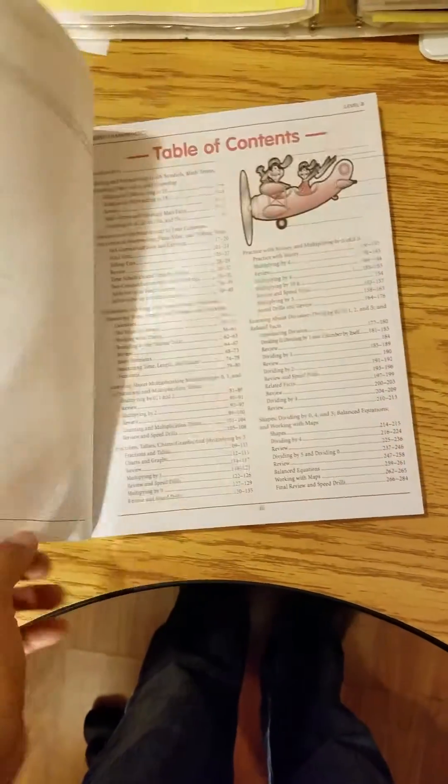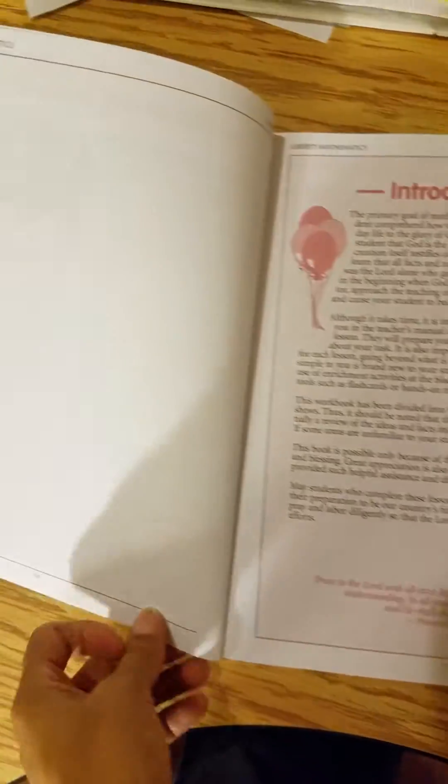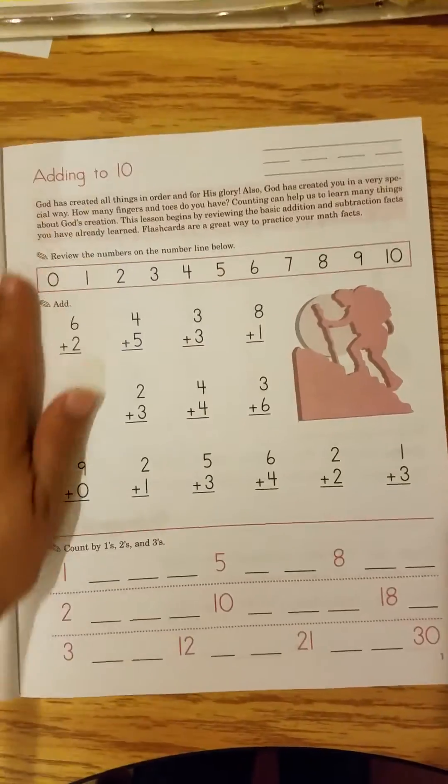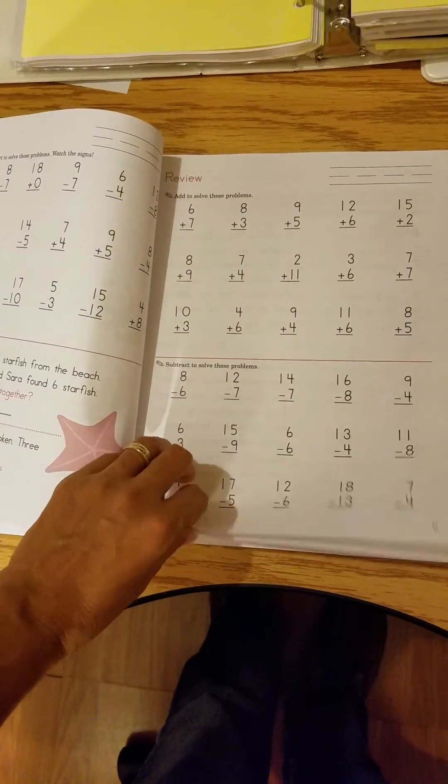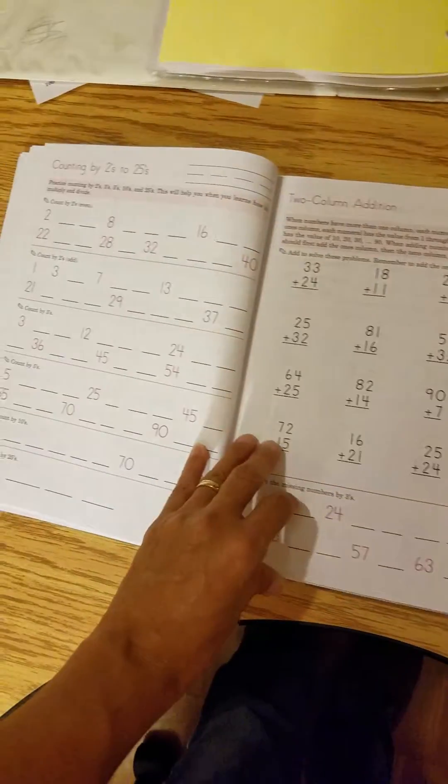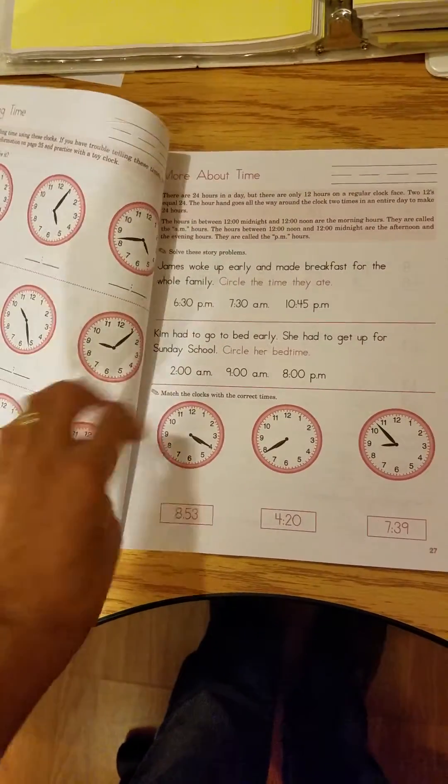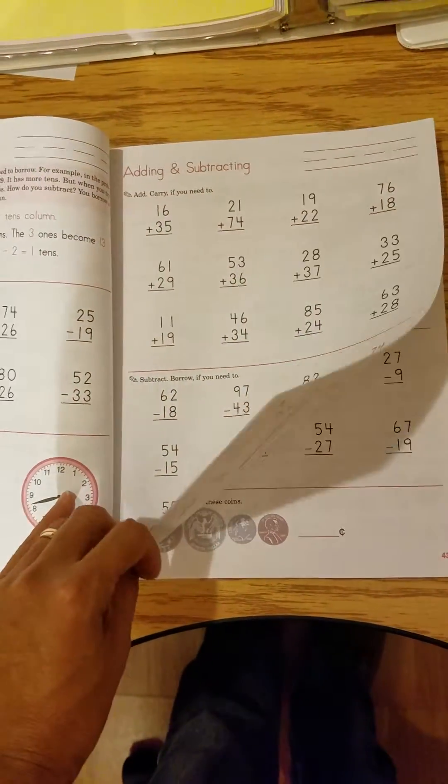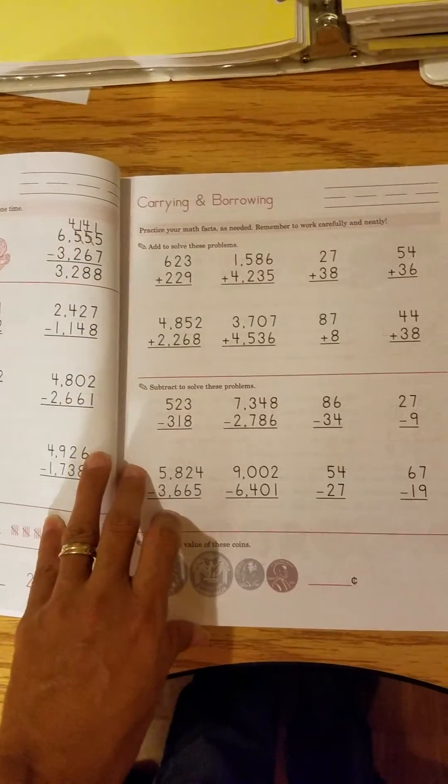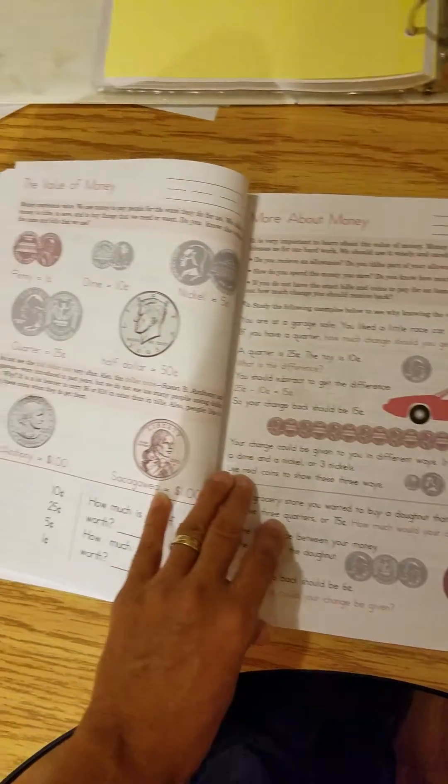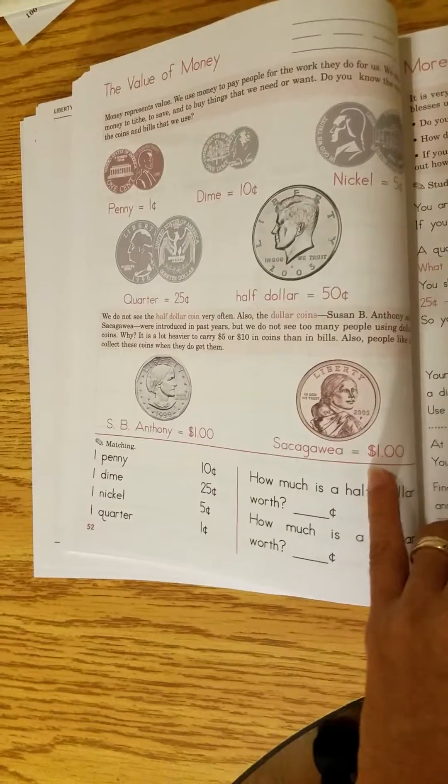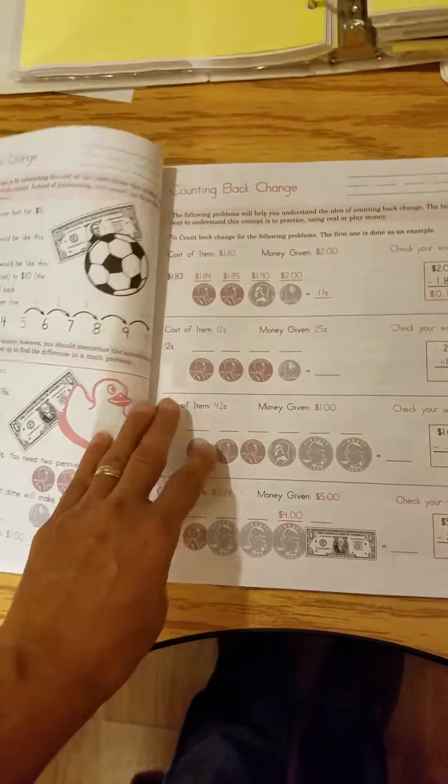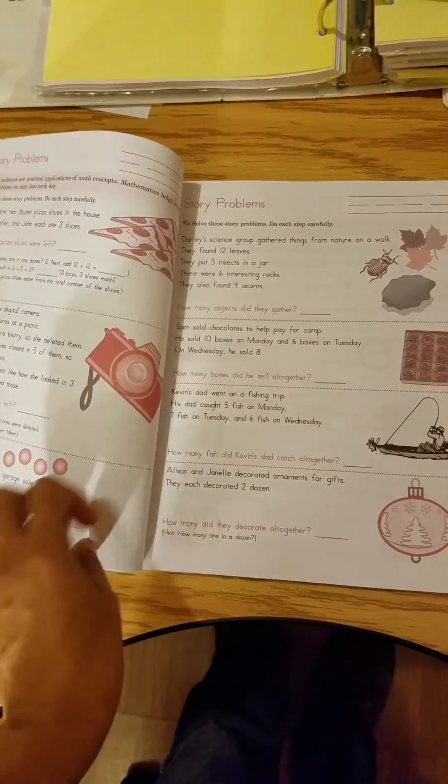Which is supposed to be their second grade. Okay, so review from the previous year. Borrowing with subtraction, adding and subtracting, borrowing, carrying and borrowing. Money, counting back change, story problems.